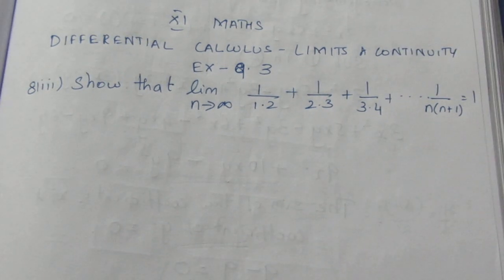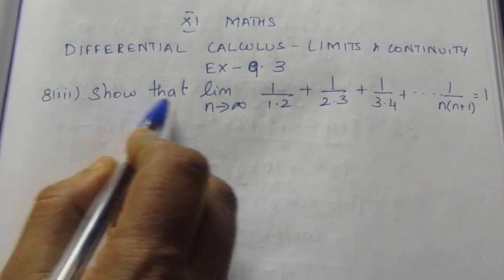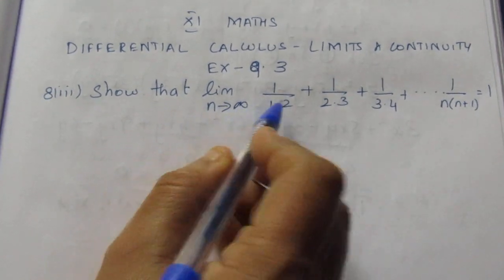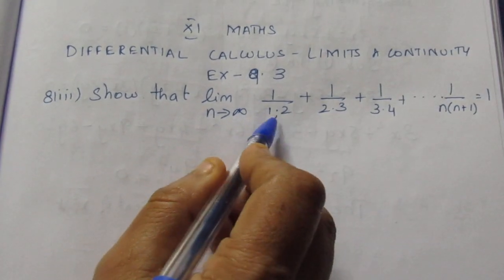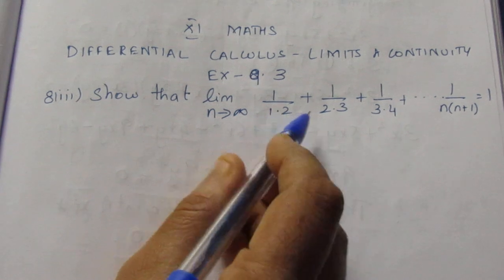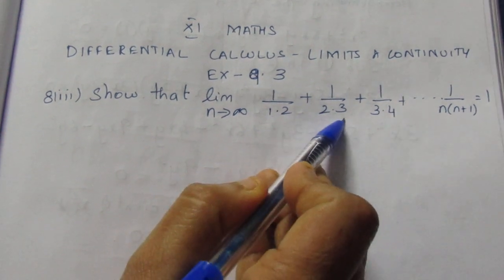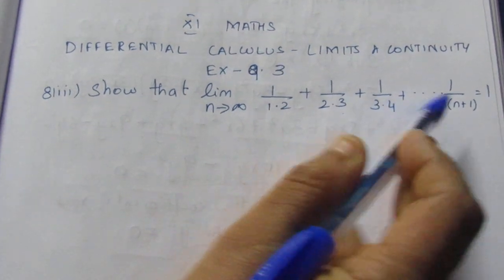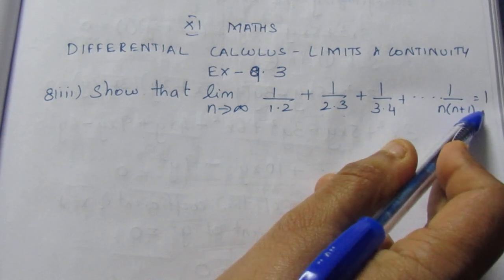Let's talk about the third sum in this video. The question asks us to show that the limit as n tends to infinity of 1/(1×2) + 1/(2×3) + 1/(3×4) + ... up to n/(n×(n+1)) is equal to 1.